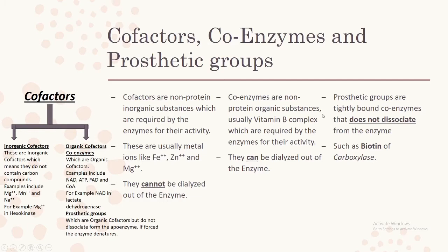Prosthetic groups are tightly bound coenzymes — they are a part of the coenzyme category but do not dissociate from the enzyme. An example is biotin in carboxylase. Importantly, inorganic cofactors and prosthetic groups do not detach from the enzyme, whereas coenzymes do. The protein part of an enzyme without a coenzyme, cofactor, or prosthetic group is known as an apoenzyme. A coenzyme meets an apoenzyme, attaches to it, and after catalyzing a reaction it then leaves.